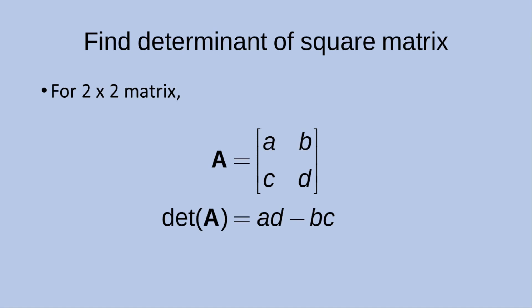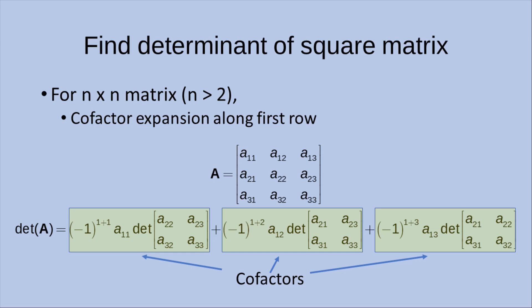So how about other cases where it is not a 2x2 matrix? If we want to find out the determinant of an n by n matrix whose dimension is larger than 2, we need to rely on the co-factor expansion along the first row. When I have a matrix A which has 9 elements, the determinant is given by the sum of these three values highlighted in yellow. Each of the terms is called the co-factor.